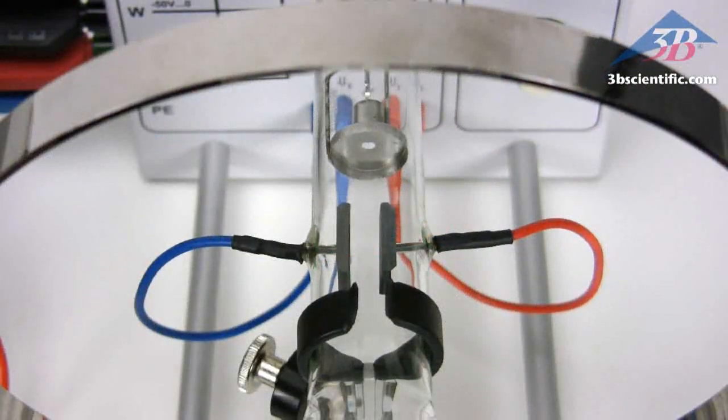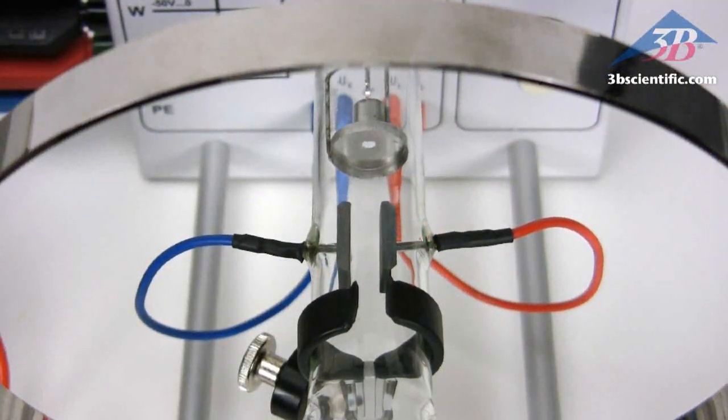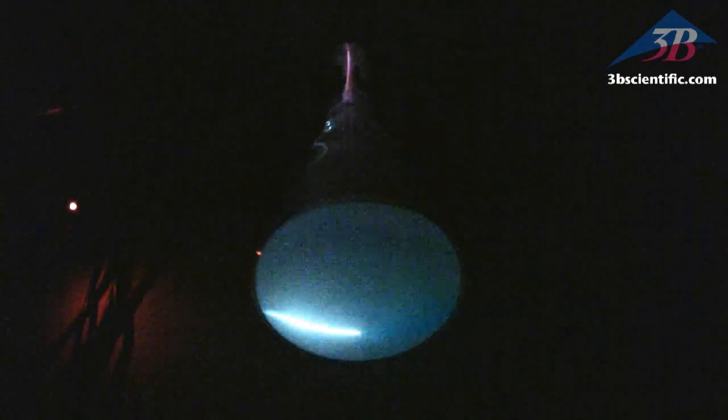The electron beam is focused using a Wehnelt cylinder. The open casing allows students to see the electron beam bend as it is deflected by an electric field, causing the picture to track in time.